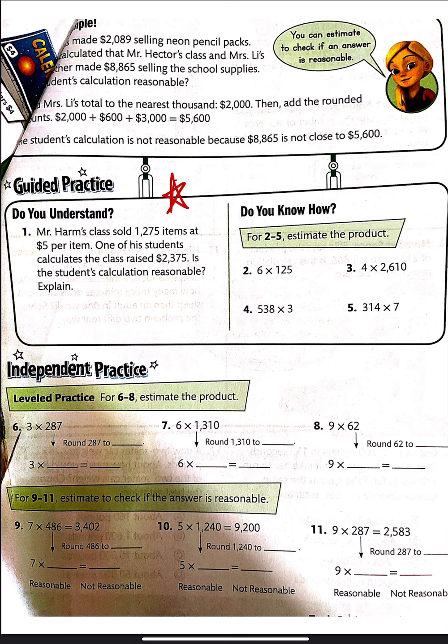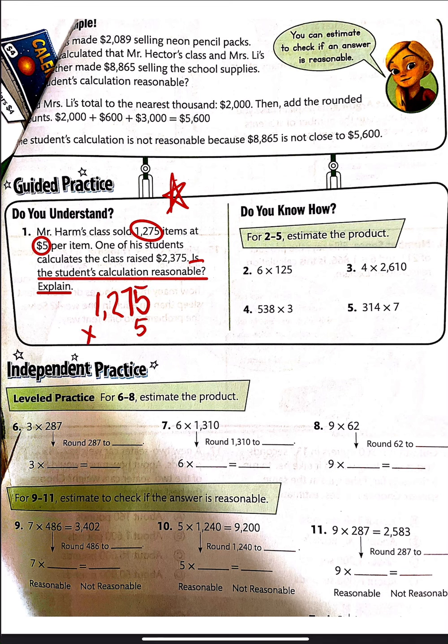And so we'll start right here with guided practice. Mr. Harm's class sold 1,275 items at $5 per item. One of the students calculates the class raised $2,375. Is the student's calculation reasonable? So we have to look at what we've got to find. Is the student's calculation reasonable? But then you've got to explain. You can't just put yes or no. So they sold 1,275 items, $5 per item. I can go ahead and tell you that this is not a reasonable calculation. And here's why.